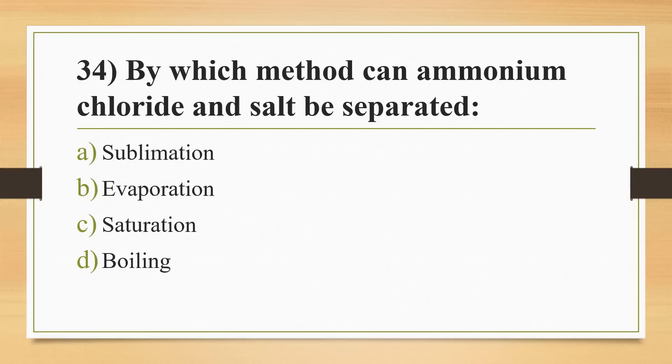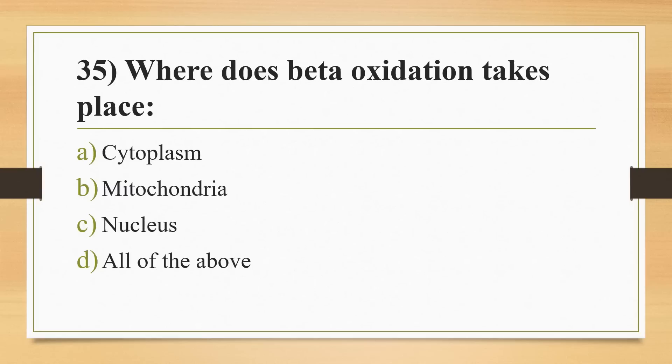Thirty-fourth question: by which method can ammonium chloride and salt be separated? Options: sublimation, evaporation, saturation, or boiling. Answer is Option A, sublimation. Thirty-fifth question: where does beta oxidation take place? Options: cytoplasm, mitochondria, nucleus, or all of the above. Answer is Option B, mitochondria.